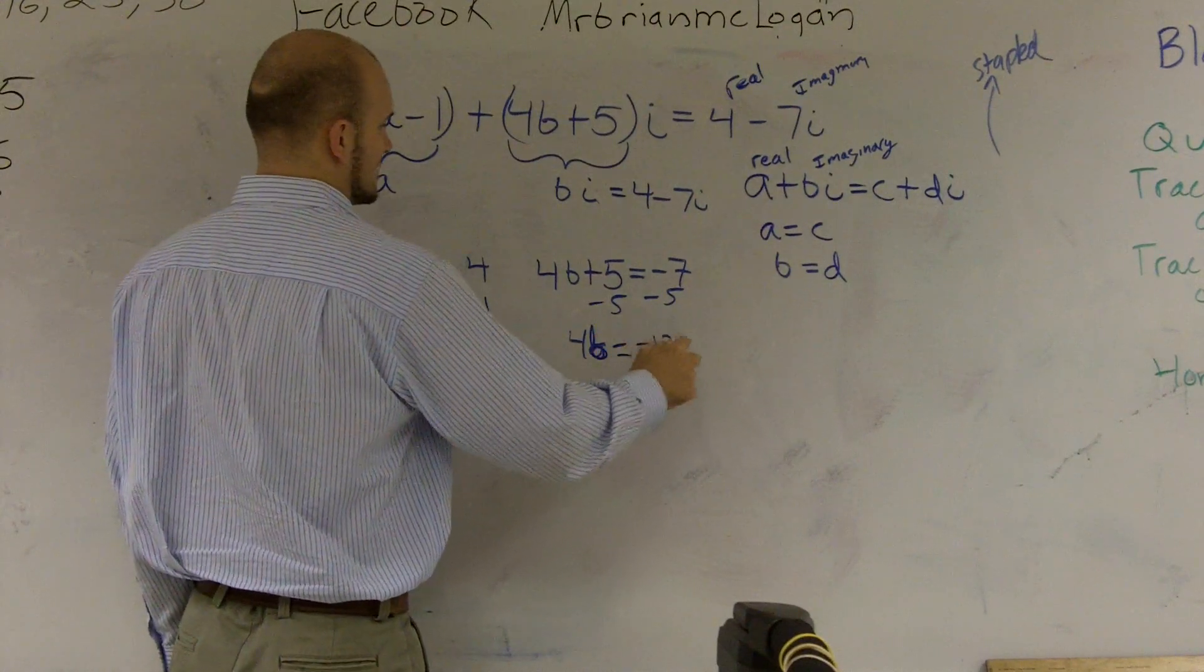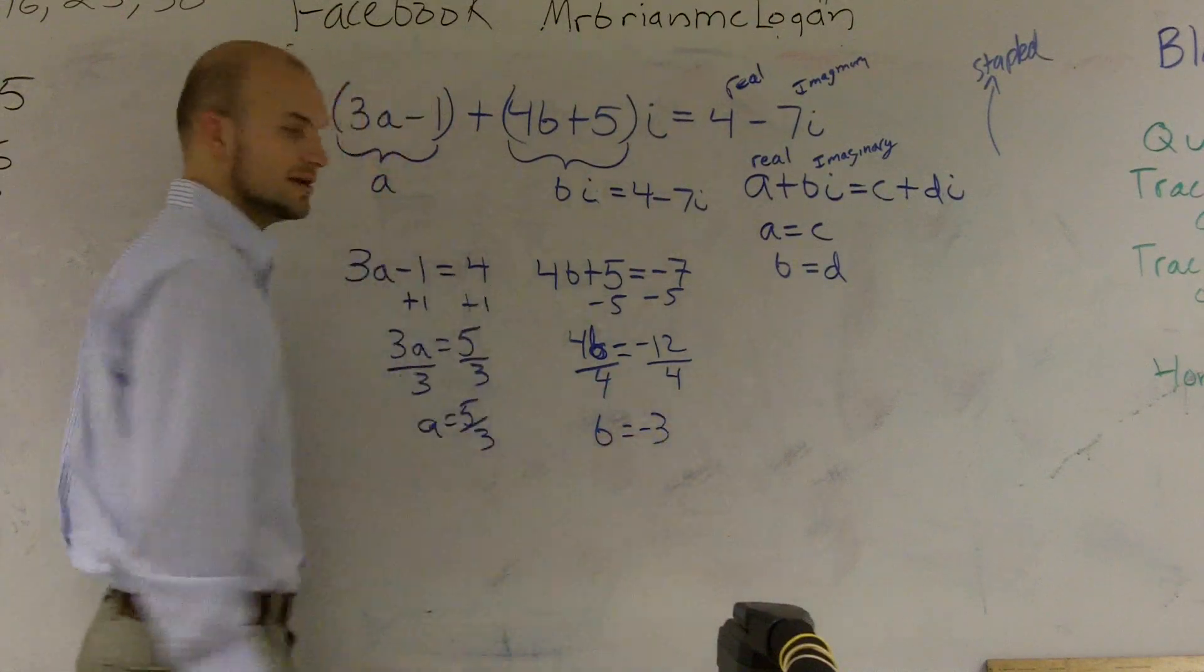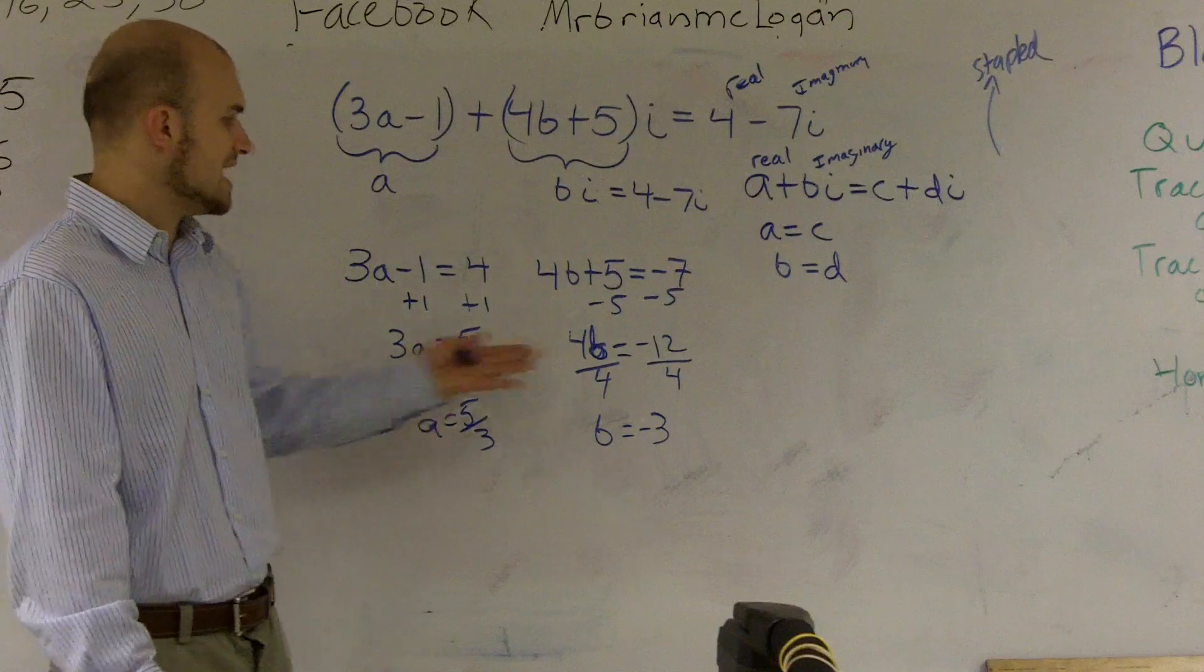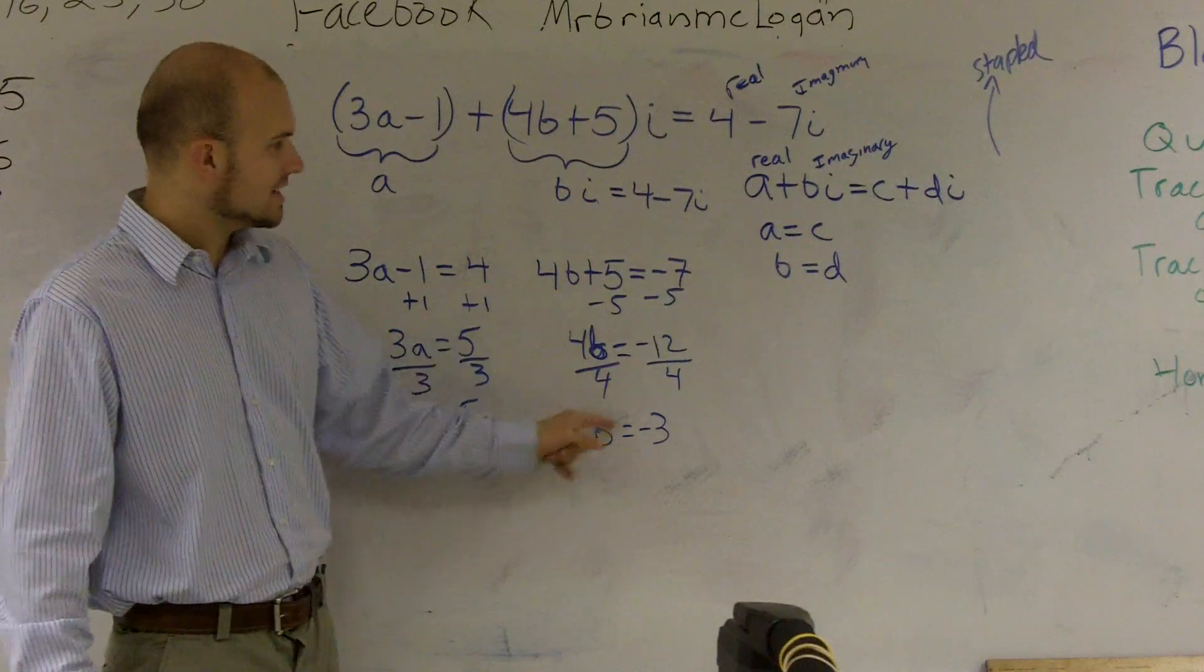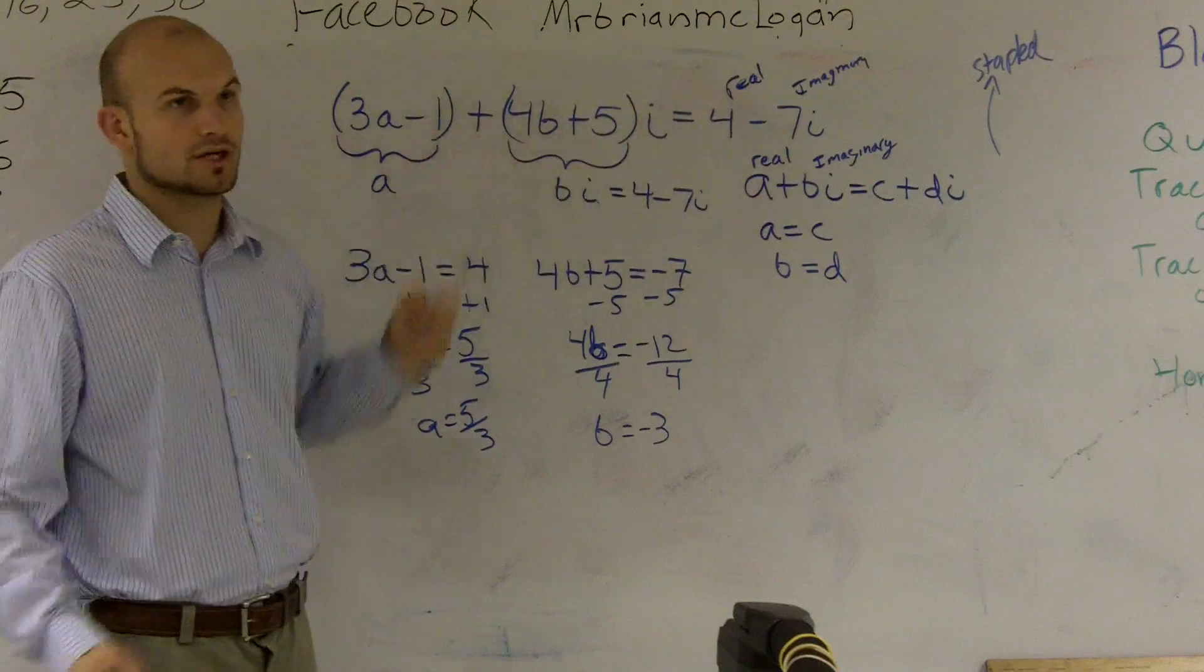4b equals a negative 12. Divide by 4, b equals a negative 3. So therefore, the values for a and b have to be 5 thirds and negative 3 for these two complex numbers to equal each other.